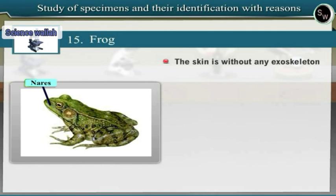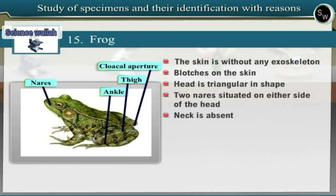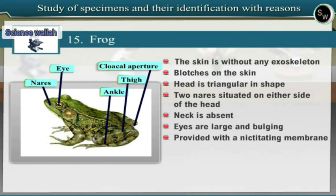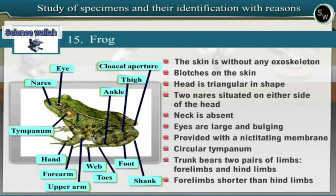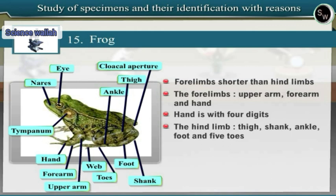The skin is without any exoskeleton. In Rana tigrina, there are blotches on the skin. The head is triangular in shape. There are two nares situated on either side of the head. Neck is absent. The eyes are large and bulging, provided with a nictitating membrane. Behind each eye lies a circular tympanum. The trunk bears two pairs of limbs — forelimbs and hindlimbs. Forelimbs are shorter than hindlimbs. The forelimbs consist of upper arm, forearm and hand with four digits. The hindlimb consists of thigh, shank, ankle, foot and five toes. The cloacal aperture is seen towards the posterior side of the body.